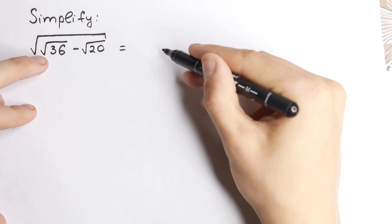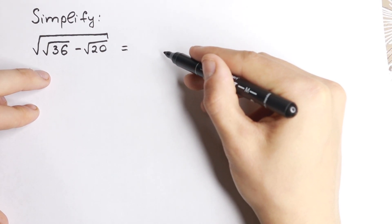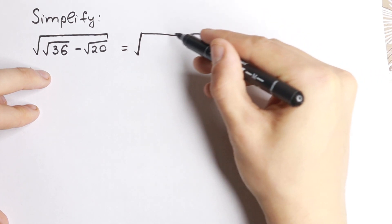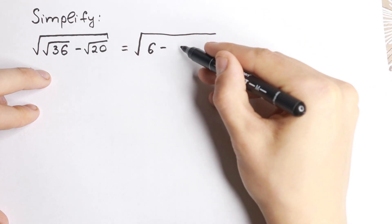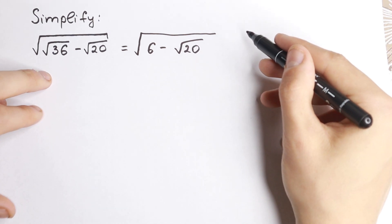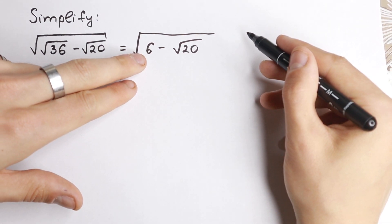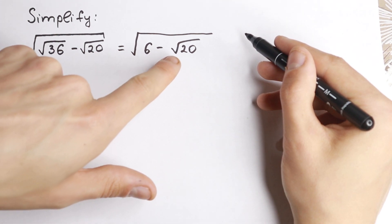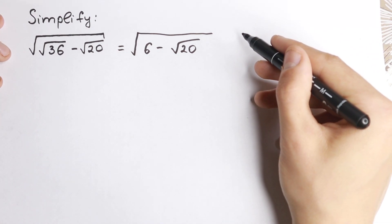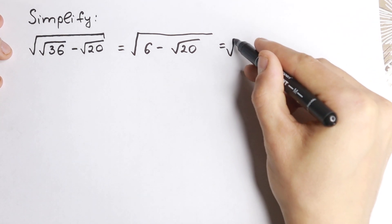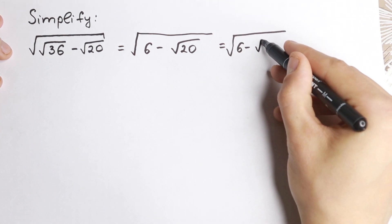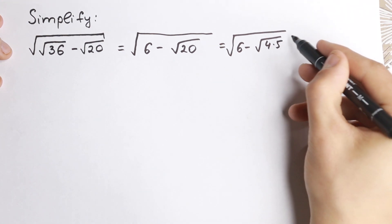First of all, we know that square root of 36 equals 6. So we can start with this. Square root of 36 equals 6 minus square root of 20. This 6 is fine as it is, but this square root of 20 we can write as square root of 4 times 5.